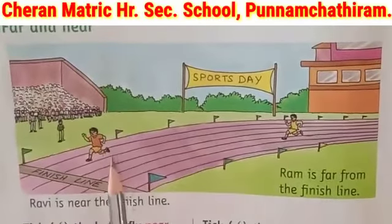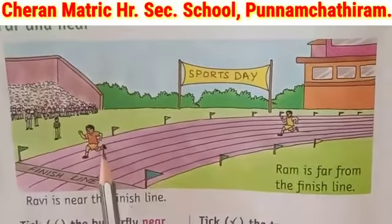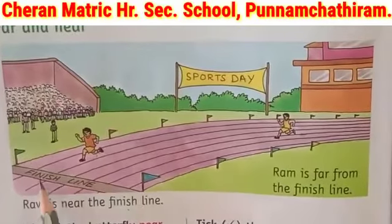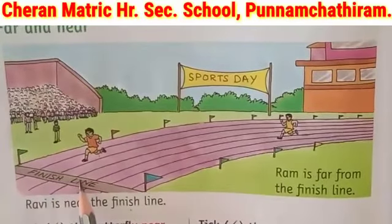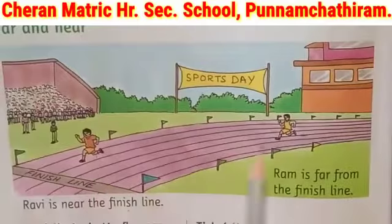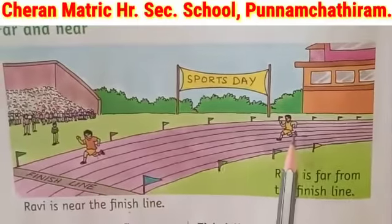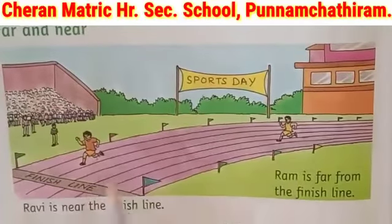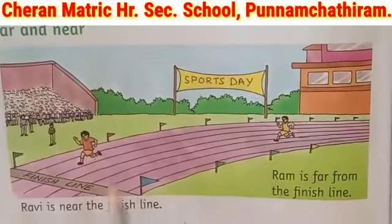Where is Ravi? Yes, Ravi is near the finish line. Where is Ron? Yes, Ron is far from the finish line.